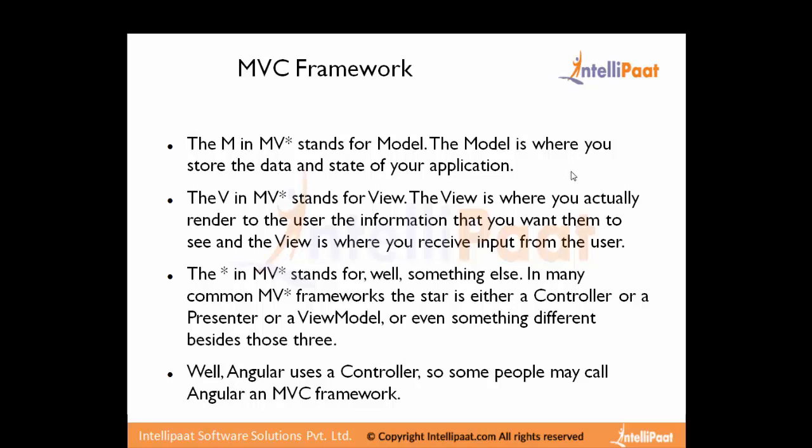The V in MV* stands for View. The View is where you actually render information to the user and also where you receive input from the user. Basically, the View is whatever output we show to the user in the browser — it contains data and HTML. We also use the View to take input from the user, like from text boxes.